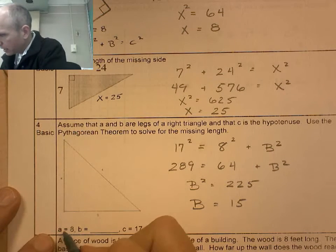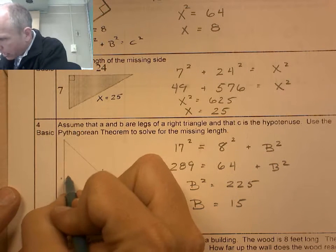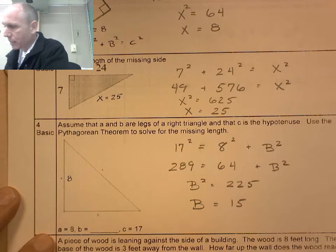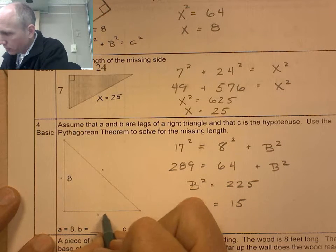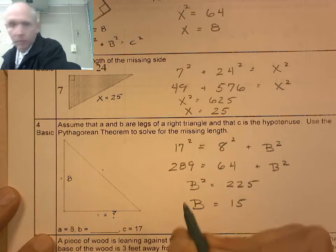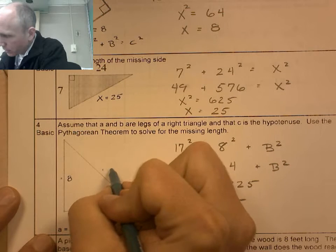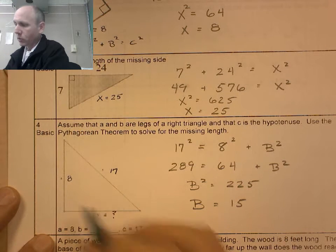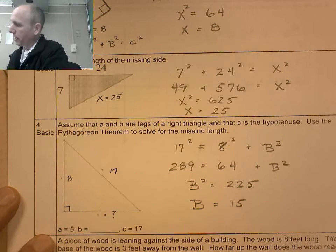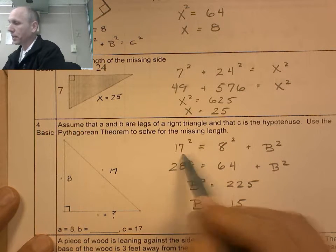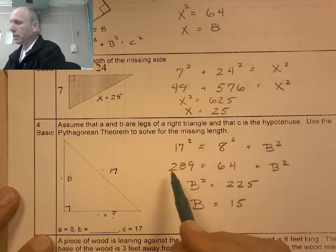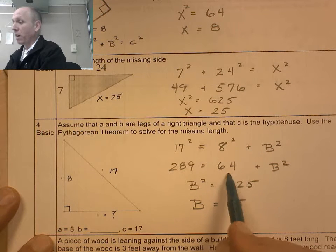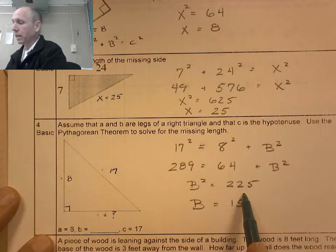We're going to do this again. This time, they said that a equals 8. Well, that's 8 right there. B is the unknown. And c equals 17. So this squared plus that squared is going to be that squared. And we know this is a right angle. So 17 squared equals 8 squared plus b squared. Square them. So 289 minus the 64 gives me 225. The square root of 225 is 15.